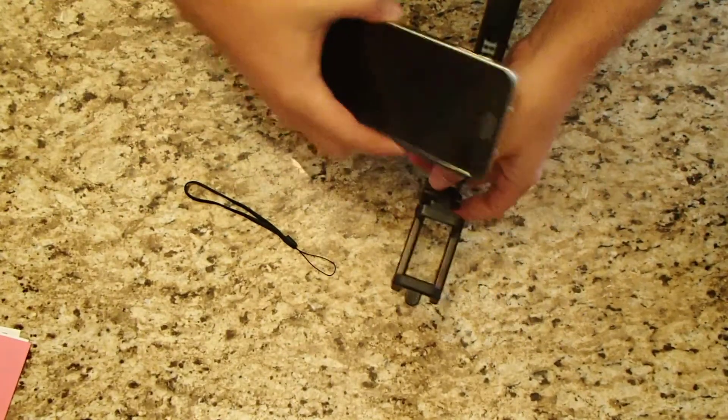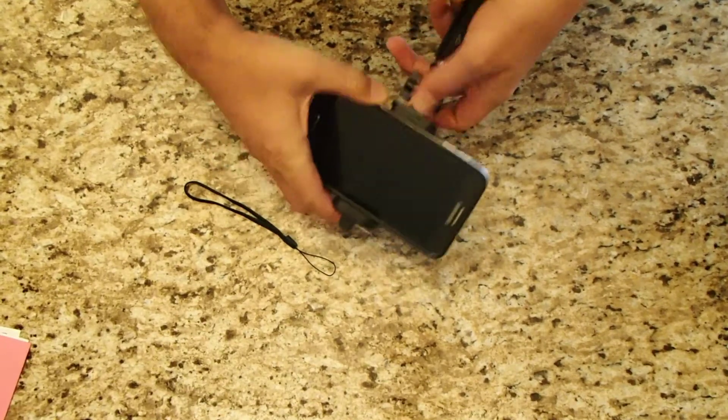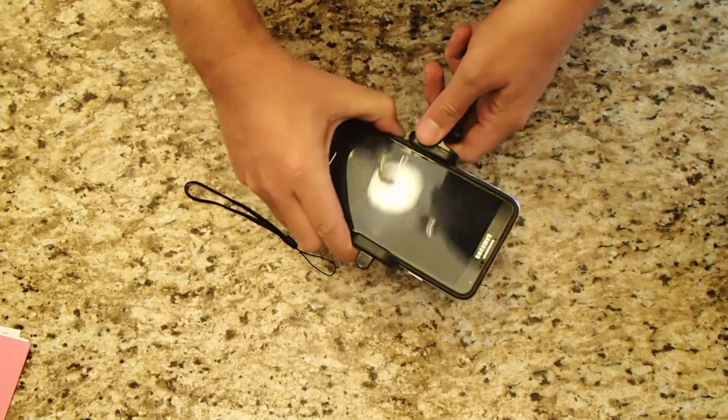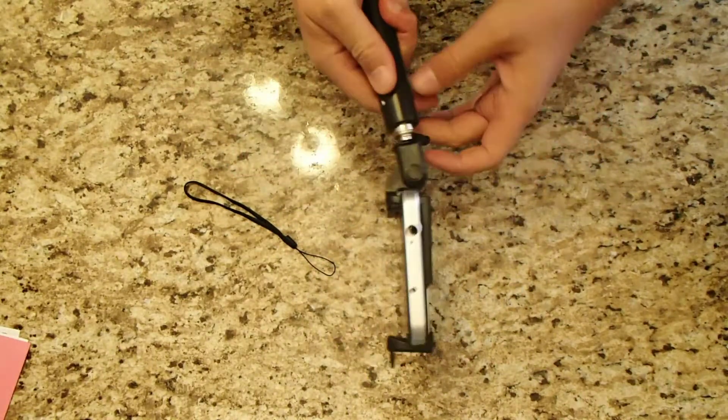So, here's the test. We're going to take a Galaxy Note 3, which is a very wide phone. And it has a bumper case as well. And it fits into the selfie stick. So, that's big.